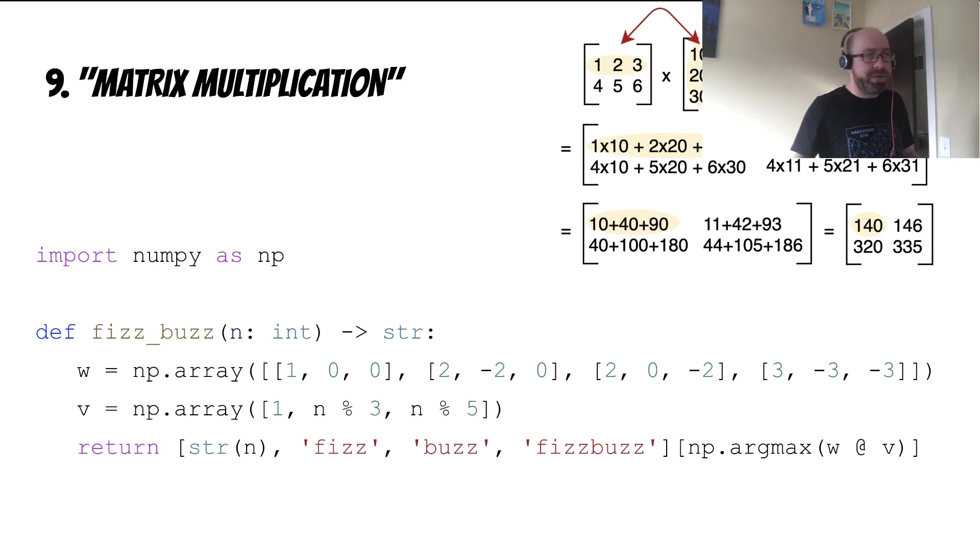Matrix multiplication is pretty popular these days. So if you're into NumPy, here's a NumPy-based solution that takes a weights matrix, multiplies it by a vector, and takes the argmax and uses that to solve it. This may be a little bit surprising as to why it works. But if you stare at the code or read the book or work through it line by line, hopefully you'll get it.